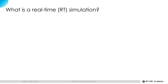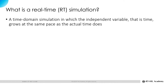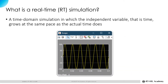What is Real-Time Simulation? A real-time simulation is a time domain simulation in which the independent variable — that is time — grows at the same pace as the actual time does. For example, this figure shows the current flowing through our good old resistor that was simulated in MATLAB Simulink. As the figure shows, the simulation lasted for 0.1 second, or 100 milliseconds.